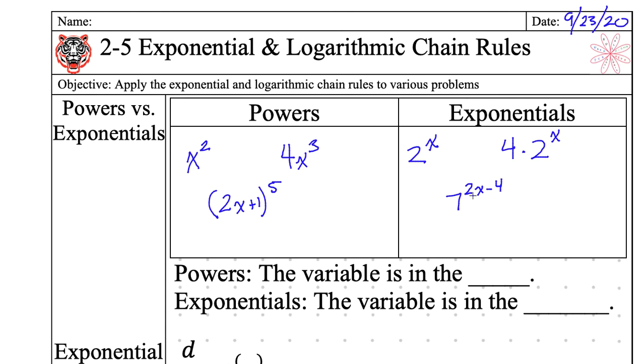Exponential has the exponent with the variable. Power has a power that is a number. All right, so quiet, raise your hand. Powers. The variable is in the... Where is that letter? The variable is in the... It's either the base or the exponent, right? Where is the variable for powers? I'm in powerhouse. Where is the variable? You got a tough one?